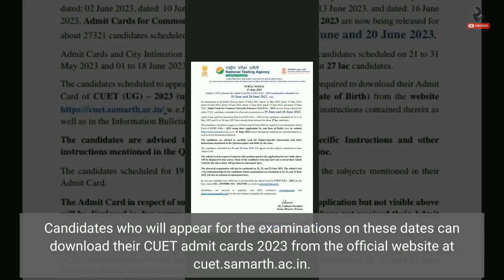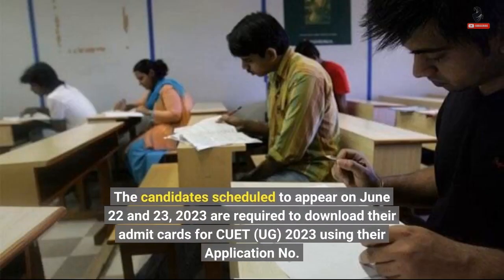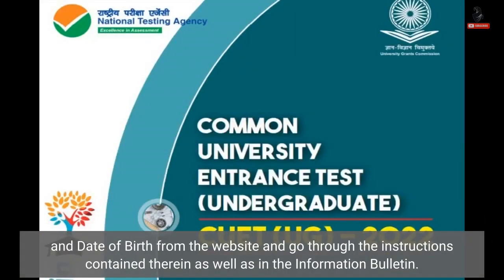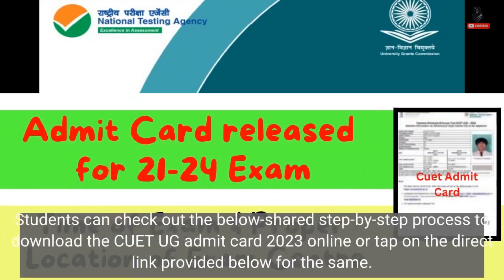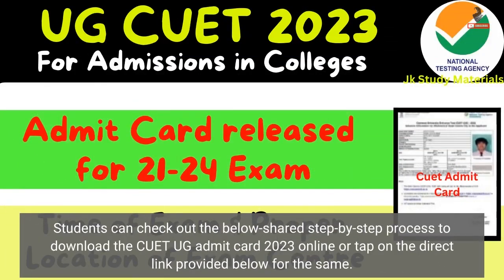Candidates can download their CWIT Admit Cards 2023 from the official website at CWIT Samarth A.C.N. The candidates scheduled to appear on June 22 and 23, 2023 are required to download their Admit Cards for CWIT UG 2023 using their application name and date of birth from the website, and go through the instructions contained therein as well as in the information bulletin.